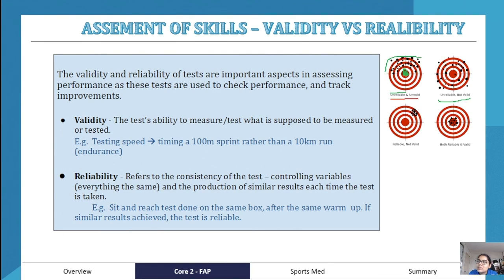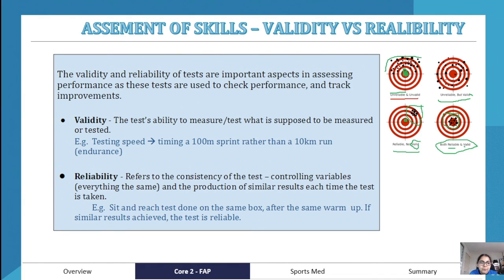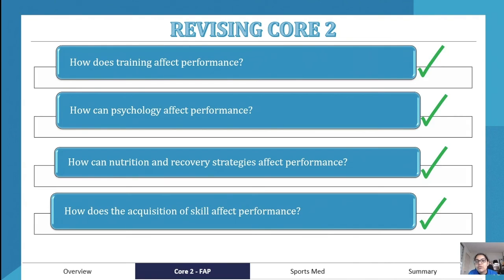The third scenario is reliable but not valid — results are concentrated in one place but not near the target. The fourth scenario is both reliable and valid — results consistently hit the correct target area every time. This means the test produces similar results consistently and measures what it is supposed to. Validity and reliability are important concepts in science generally, including biology.